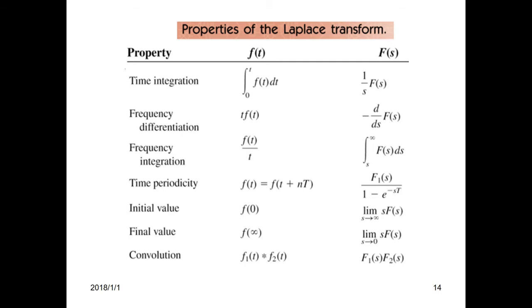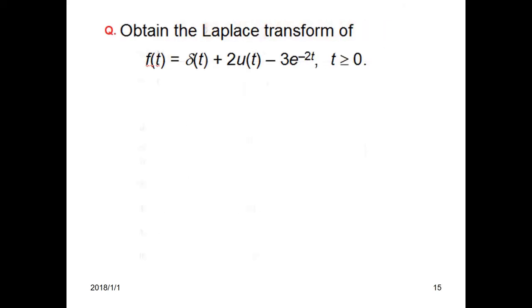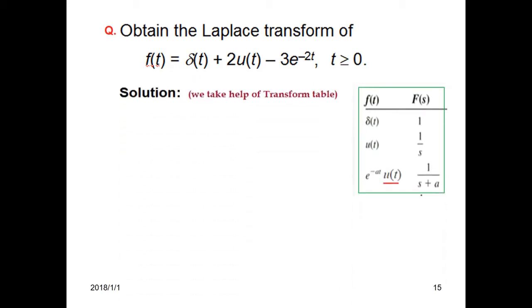From other properties, you might have to refer to these tables. Okay, so let's solve an example. We have to find the Laplace transform of this function f(t), which is a variety of all three that we learned or derived. So we take help of these three tables: Delta t is 1, u(t) is 1 over s, and e raised to the power at u(t) is 1 over s plus a. So we take the Laplace: f(t) Laplace is F(s), and Laplace of Delta t plus